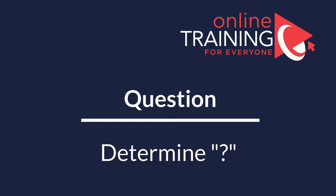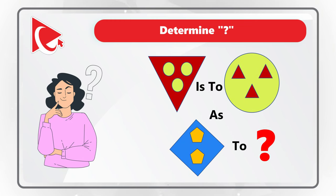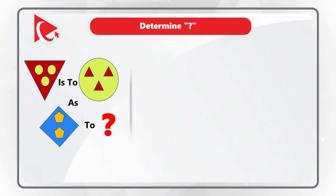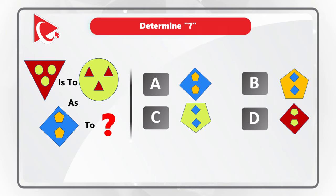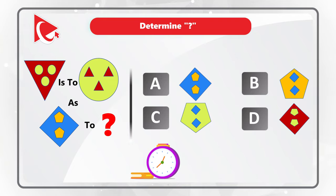I love this question because you need to determine the relationship between shapes. You need to determine which shape has a similar relationship to a rectangle. If you take a close look, you will see that there are smaller shapes inside the larger shapes. You have four different choices: A, B, C, and D. Take a close look to see if you can come up with the answer.